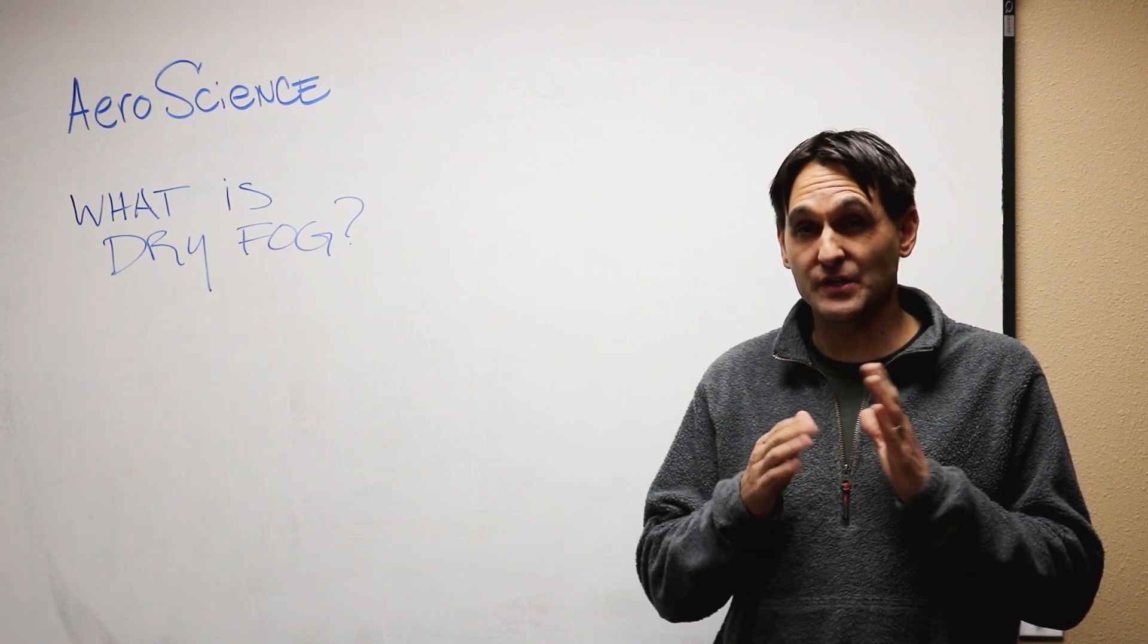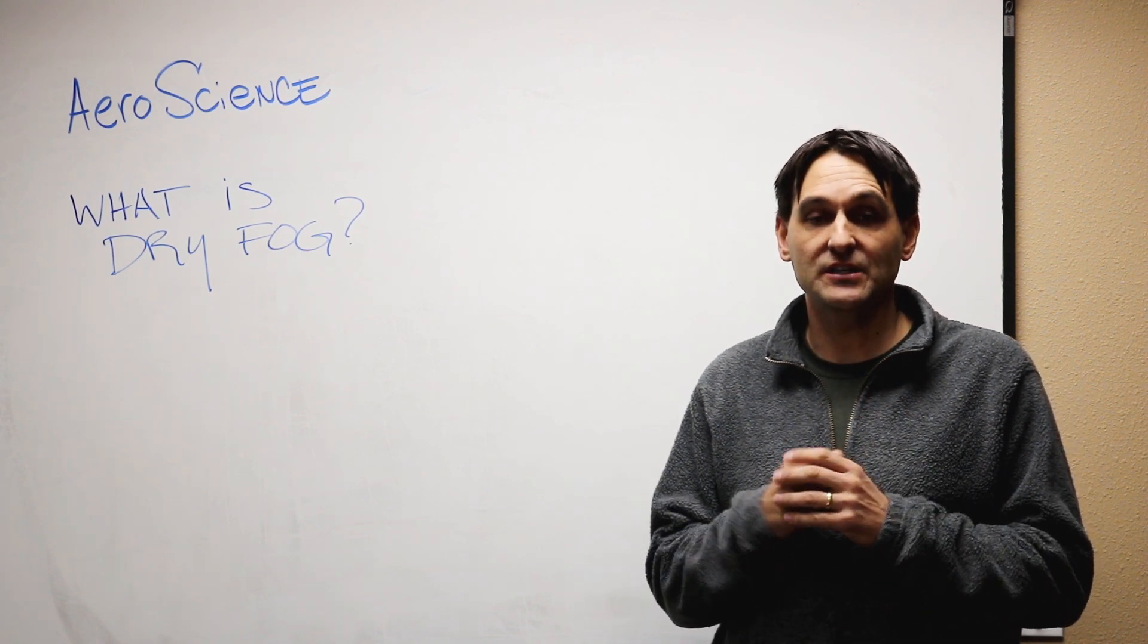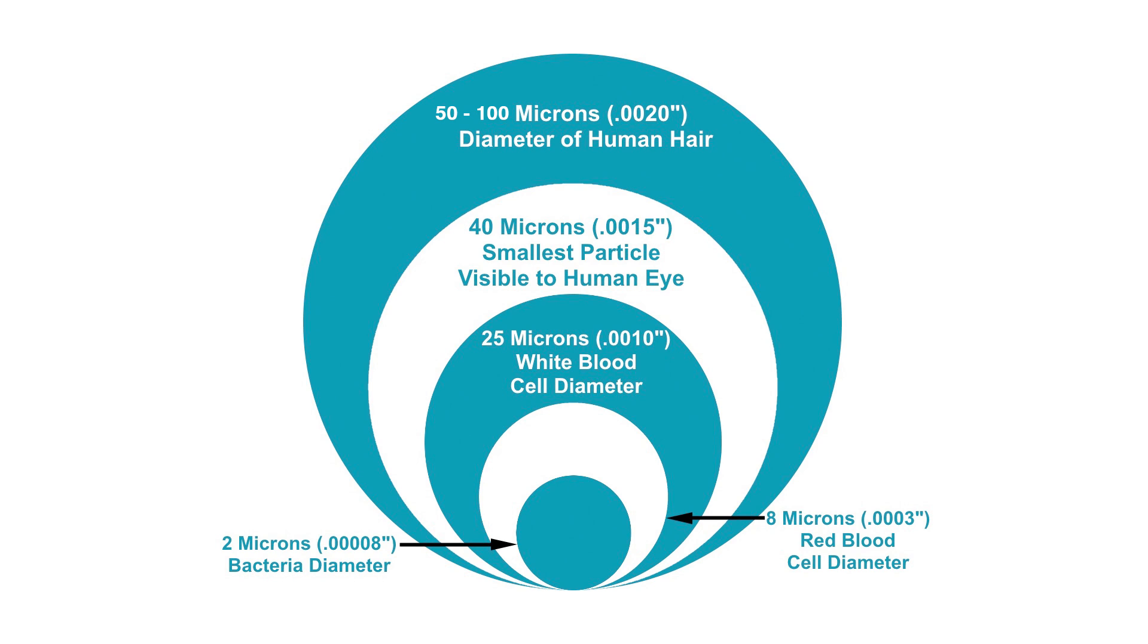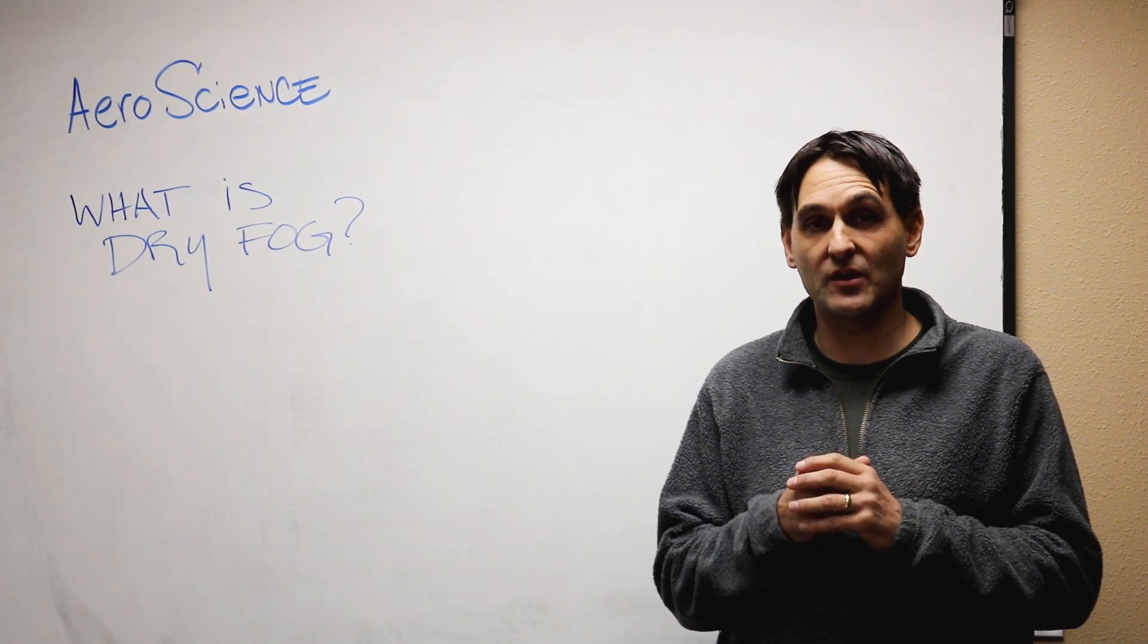So dry fog is zero to ten microns and just for reference, a human hair is around a hundred microns and it's hard for the human eye to see below 30 microns. So dry fog is zero to ten microns.